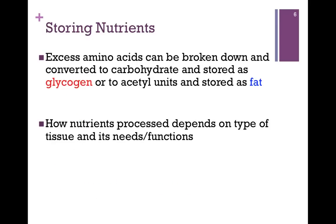So what happens if we overeat proteins? Well, the excess amino acids that we take into our diet can get converted to carbohydrate and stored as glycogen. But remember, we have limited cupboard space for glycogen. Once we store what we can as glycogen, the leftovers are converted to acetyl units and, you guessed it, stored as fat. How nutrients are processed depends very much on the type of tissue and its needs or functions — its metabolic toolbox, as it were.